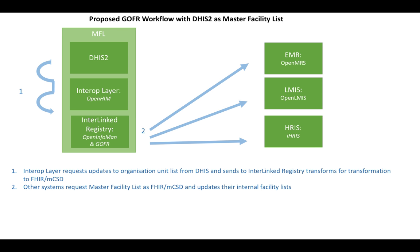This setup requires that each of the source systems — such as an EMR, LMIS, and HRIS — has to have two processes: one is to request a list of health facilities using the FHIR standard, and then write the logic to do merging into its internal data store of that health facility data. So it requires a fair amount of software development on each of the source systems.